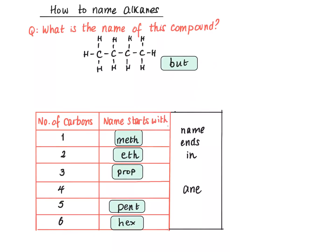So it's bute, and because it's an alkane it ends with A-N-E. So the name of this particular hydrocarbon, this alkane, which has got four carbons in, is butane.